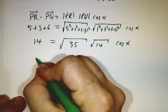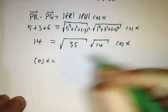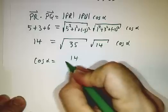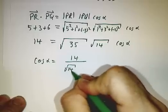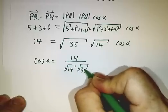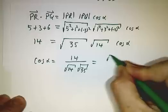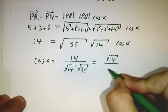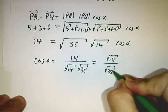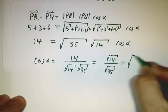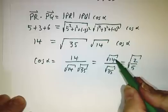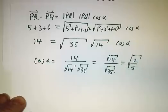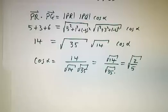1 plus 9 plus 4 makes 14 times the cosine of alpha. That means that the cosine of alpha is equal to 14 over the square root of 14 times the square root of 35, which is the square root of 14 over the square root of 35, which is the square root of 2 fifths, because this is 2 times 7, this is 5 times 7. That's one of our angles.